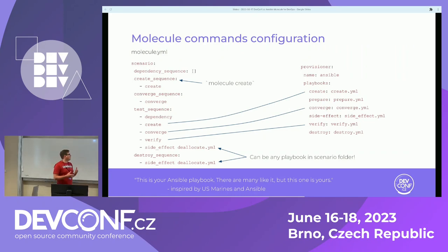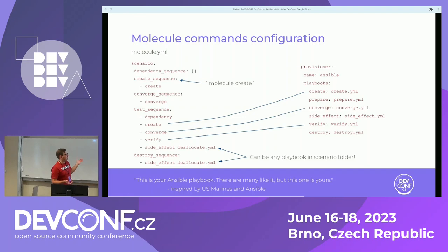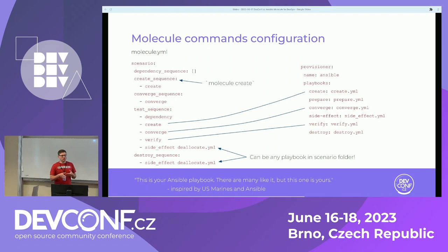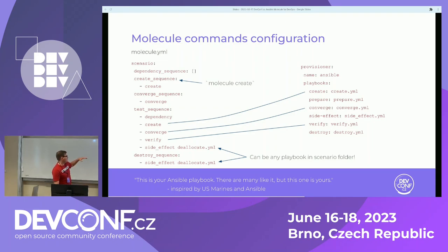So how does the molecule.yaml file look? We have scenario configuration on the left which describes, for each command like molecule create, what the sequence of actions will be. For molecule create we just create stuff, meaning we run the create.yaml playbook. This is all configurable, and this flexibility allows us to manage infrastructure. Side effects allow us to run any playbook available in the scenario folder, so we can do basically anything. We focused on backing up and restoring the whole landscape.